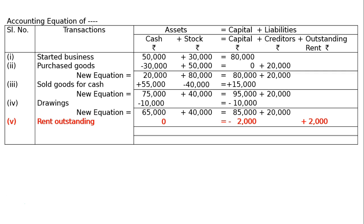Because our liability increased and we incurred the expenditure, the final equation is: cash rupees 65,000, stock rupees 40,000, capital rupees 83,000, creditors rupees 20,000, and outstanding rent rupees 2,000. This is the final answer.